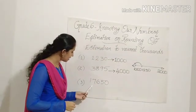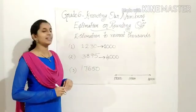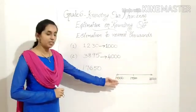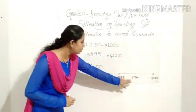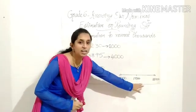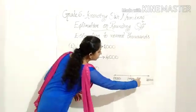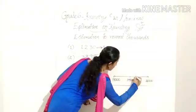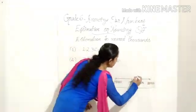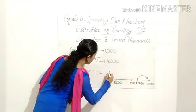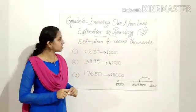The last question is 17,650. 17,650 lies between which numbers? It lies between 17,000 and 18,000, with 17,500 in the middle. 17,650 is greater than 17,500, so it lies in the upper range closer to 18,000. Therefore, 17,650 gets estimated to 18,000. The answer is 18,000. That is estimation to nearest thousands.